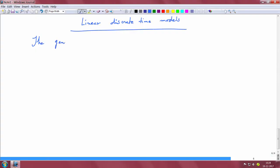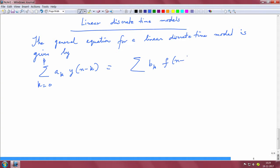Let us look into a generalized linear discrete time model. Often we will find these models very useful in practice. The general equation for a linear discrete time model is given by summation a_k y(n-k), k going from 0 to p, equals summation b_k f(n-k), k equals 0 to q.